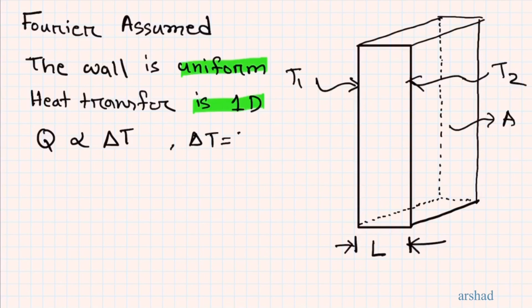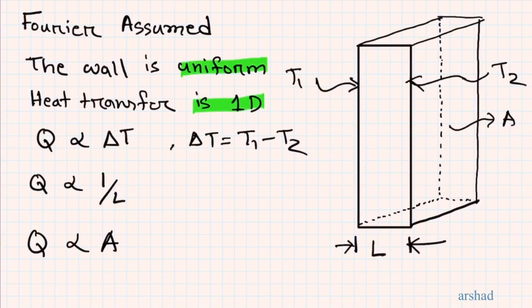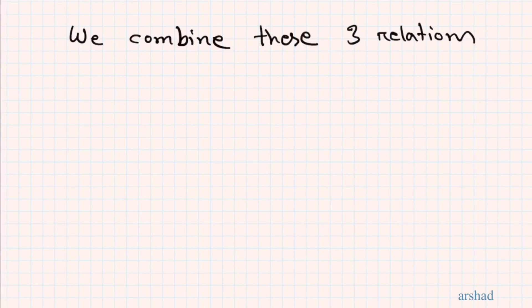Given those assumptions, Q is proportional to the temperature difference across the wall, T1 minus T2. The amount of heat transferred is also inversely proportional to the thickness — the thicker the wall, the less the heat transfer, which is why houses in cold climates have thick walls. Fourier also observed that heat transferred is proportional to the cross-sectional area A. We now have three relations to combine.